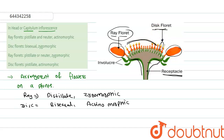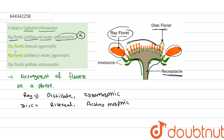Now let's look at the options. The first option says ray florets are pistillate and neuter — that part is right — but it also says actinomorphic, which is wrong. So the first option is incorrect. It also says disc florets are bisexual and zygomorphic, which is also incorrect.